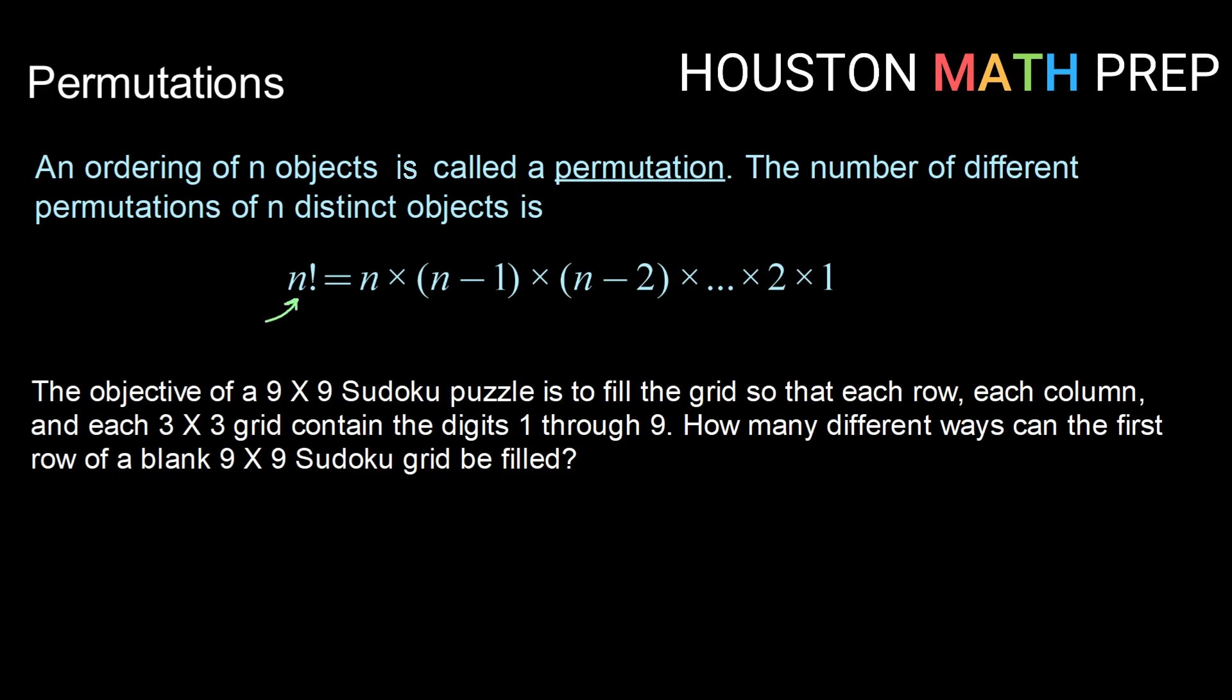So this n with an exclamation point is read as n factorial. And the way that a factorial works is we take n and we multiply it by each integer below that all the way down to 1. So, for example, 4 factorial would be 4 times 3 times 2 times 1. That is our number of ways that we can permute or order n objects.